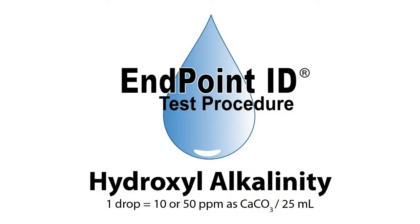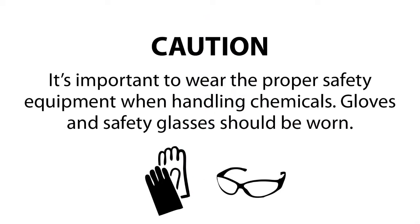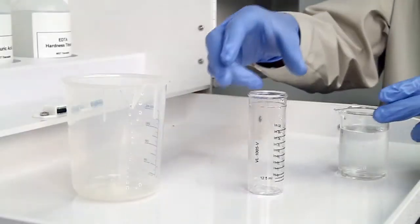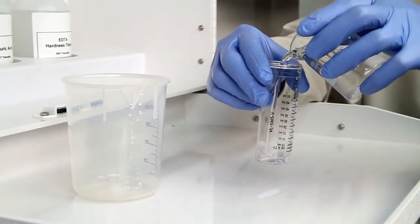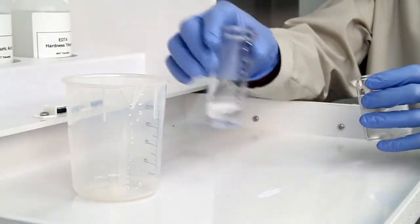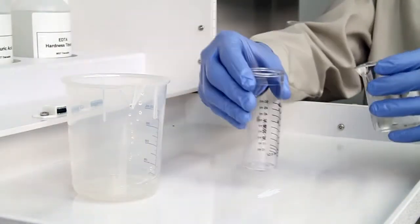This is a demonstration of a Hydroxyl Alkalinity Drop Count Test Kit using Endpoint ID procedures. The first step is to collect an accurate sample. The smallest change in sample size will lead to inaccurate results.